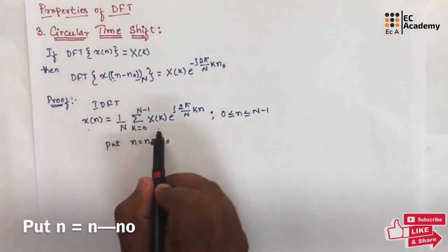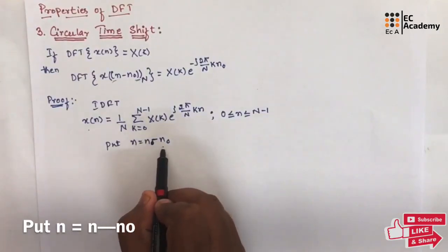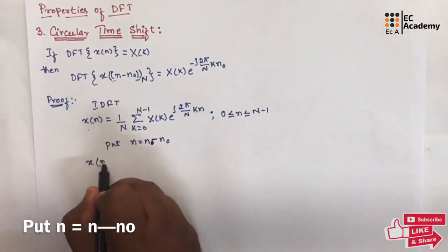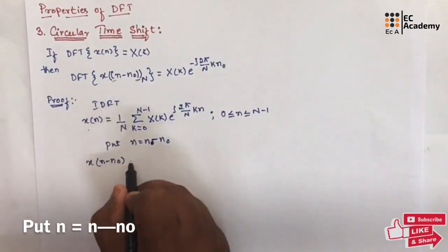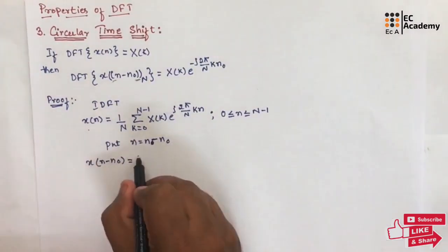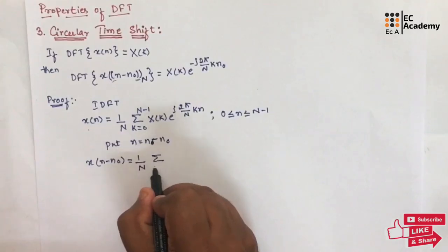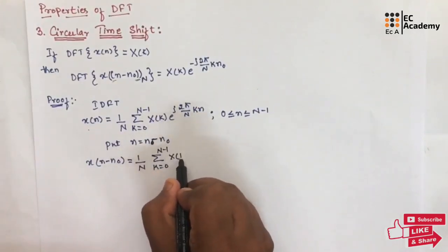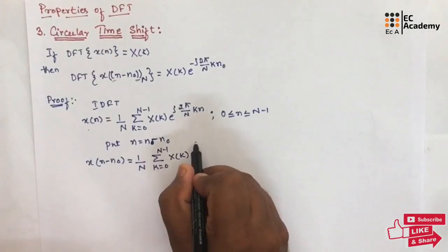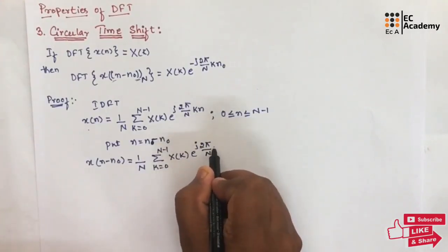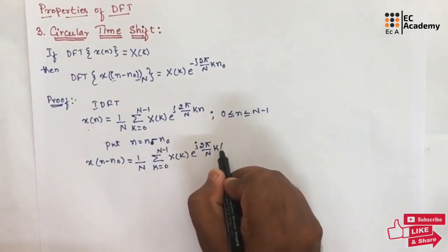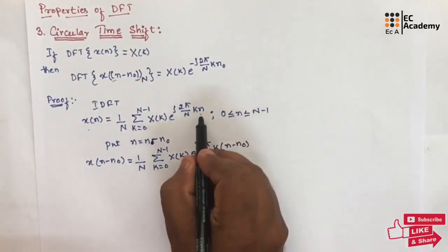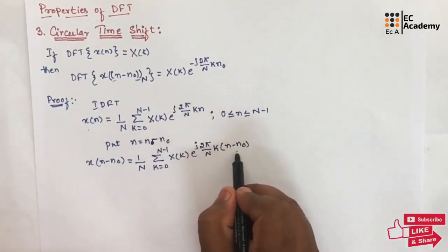In the above equation, let us put N is equal to N minus N naught. At that case, we can write the above equation as: X of N minus N naught is equal to 1 divided by N, summation of K is equal to 0 to N minus 1, X of K, e to the power of j 2 pi by N into K into N minus N naught. So here, in place of N, we are writing N minus N naught.